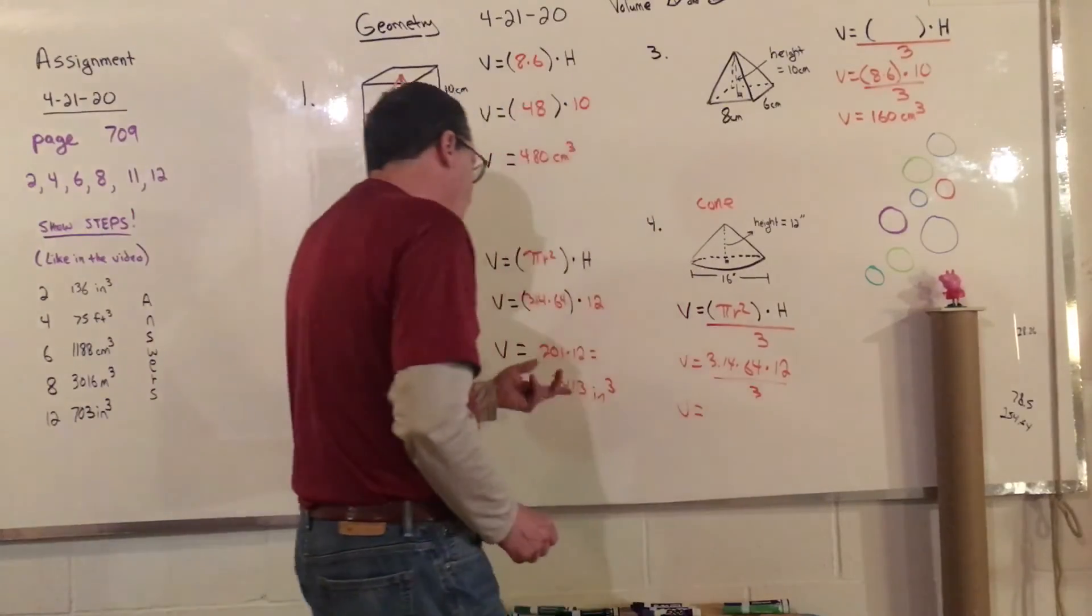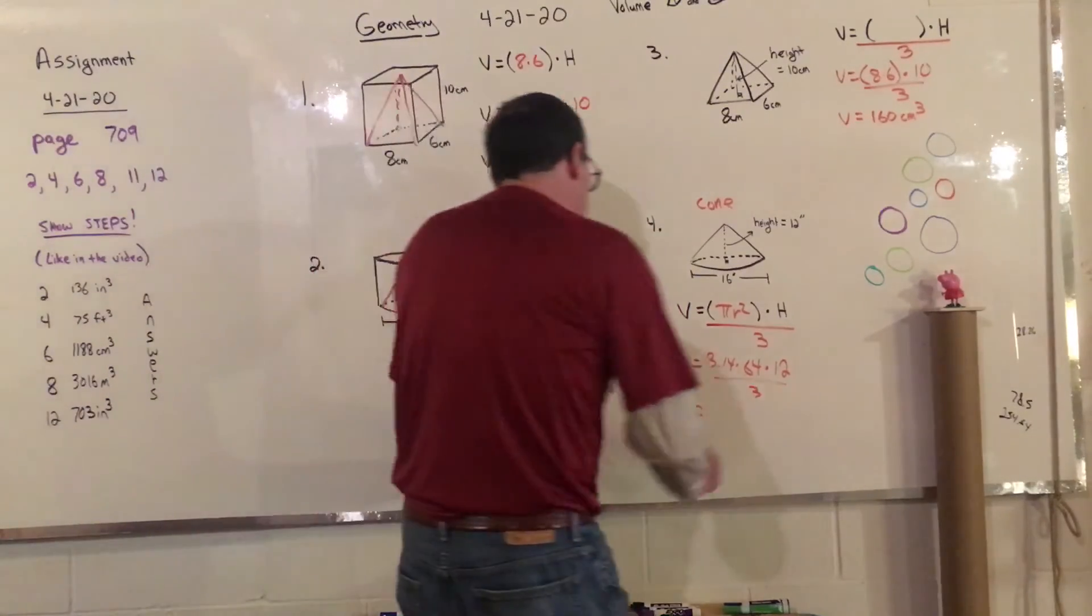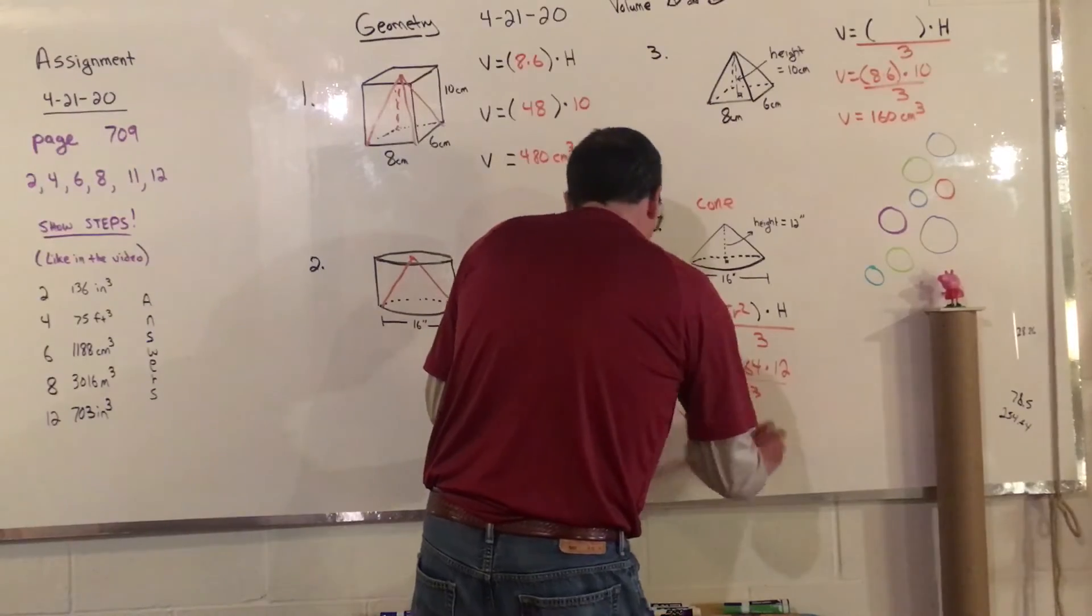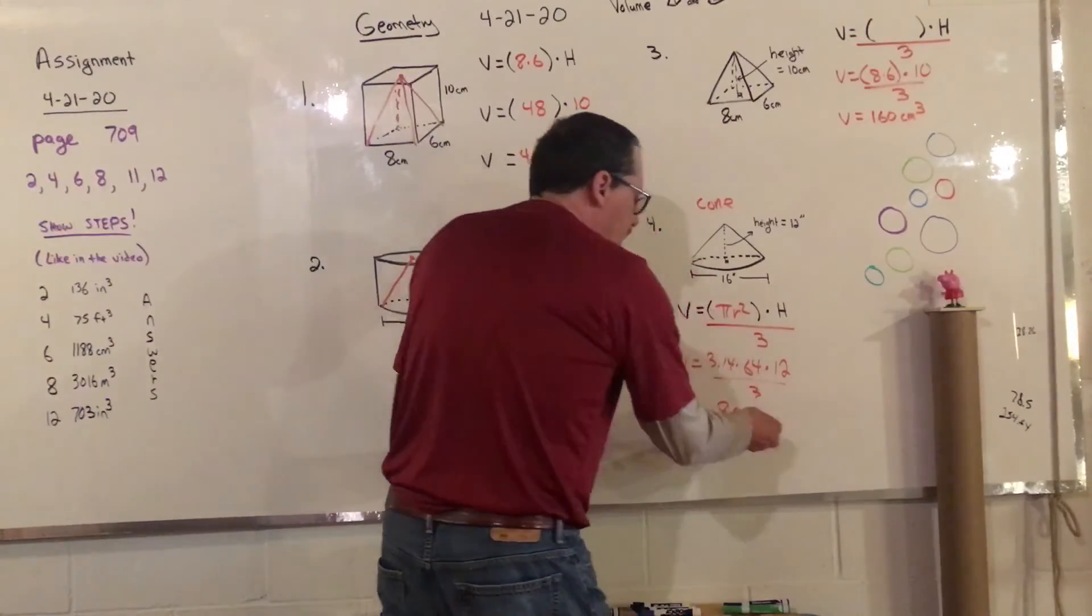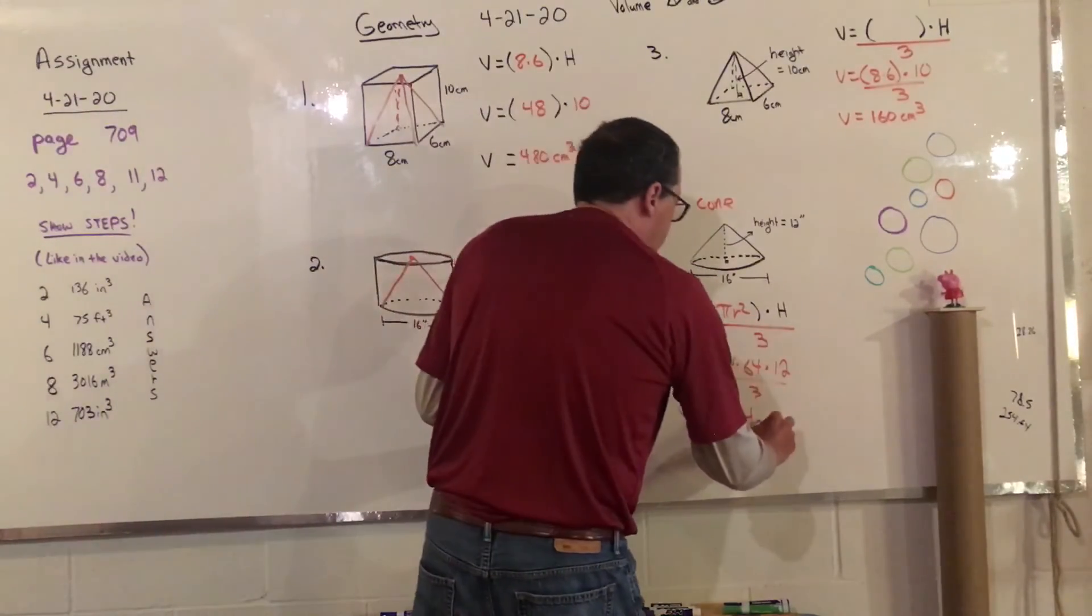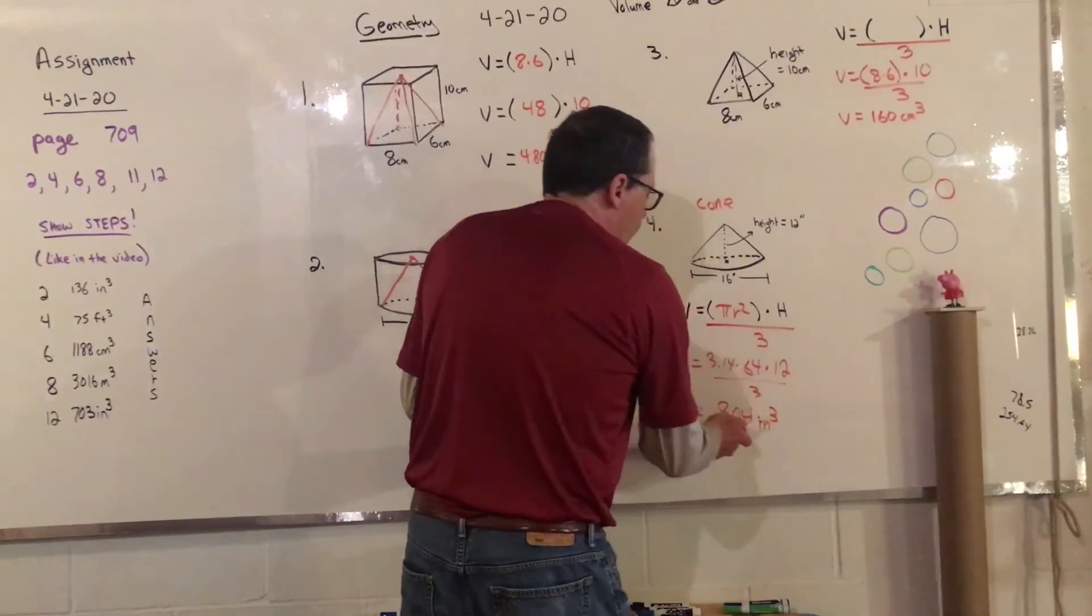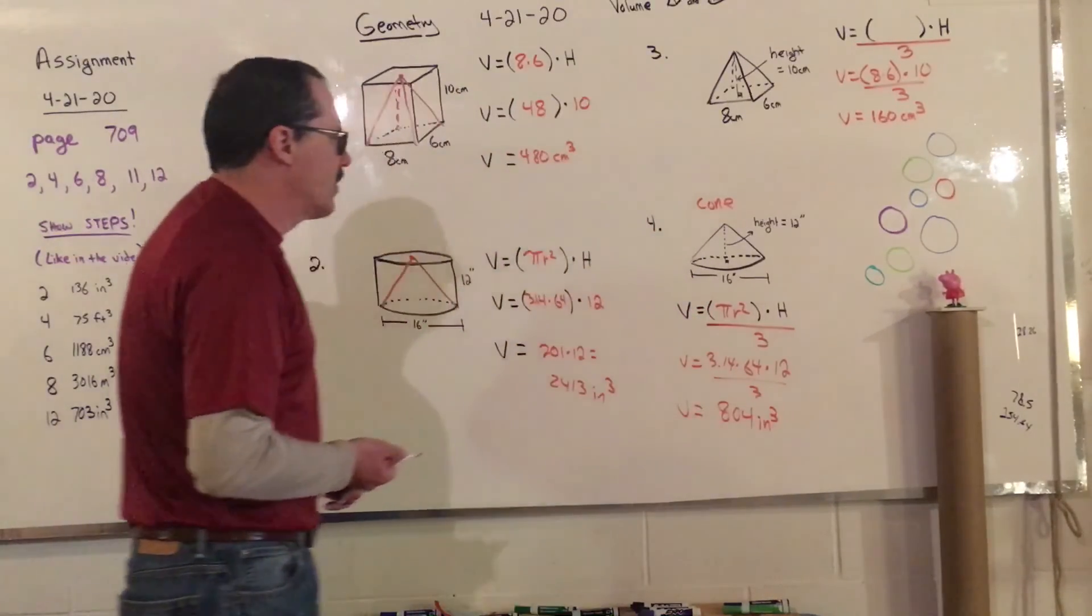So V equals, it's just going to be a third of this, so it'll be about 804. That's again, that's an approximate. That's not exact. If you do it with a calculator, you're going to get an answer close to that, but it'll be a little bit different.